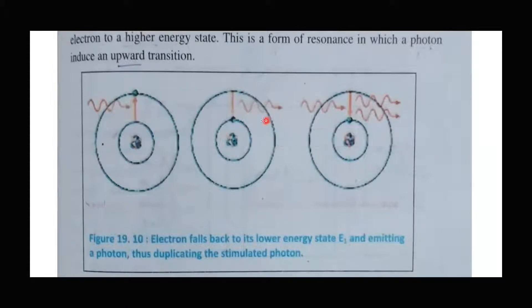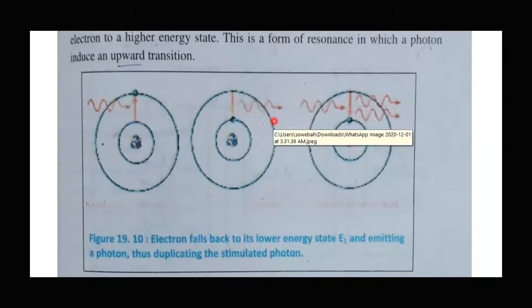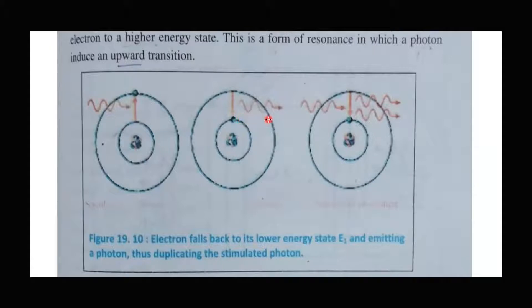To produce a laser, we don't rely on spontaneous emission, because in a laser beam we need a large number of photons moving in the same direction — in a bundle. To produce that laser beam, we need to use an external source, also in the form of a photon.